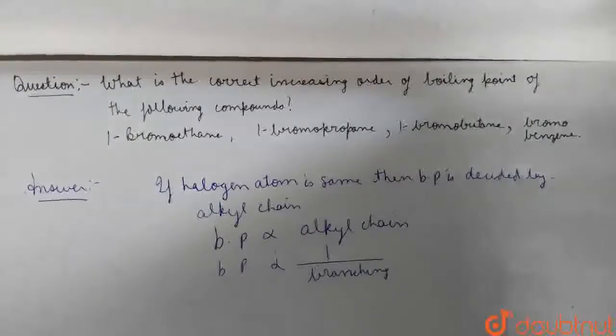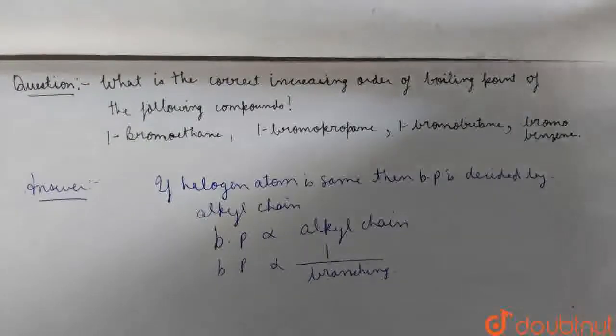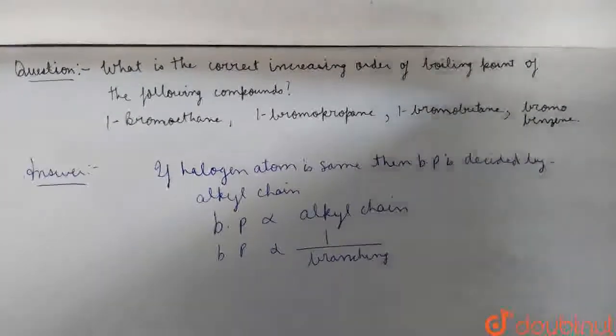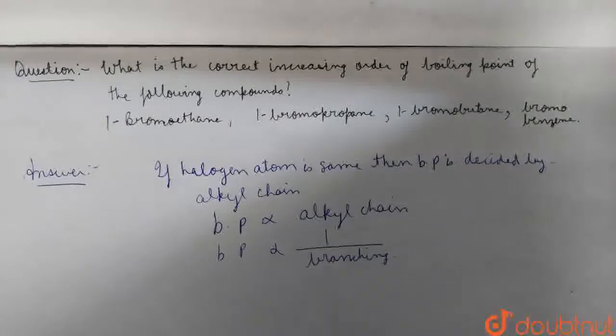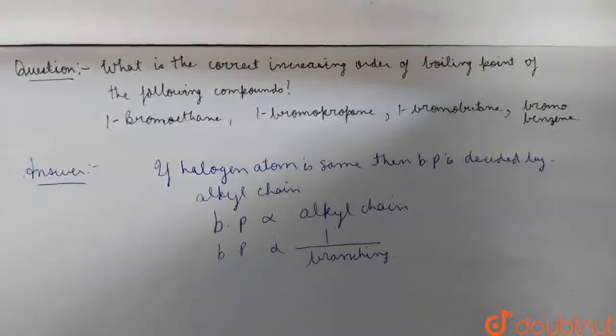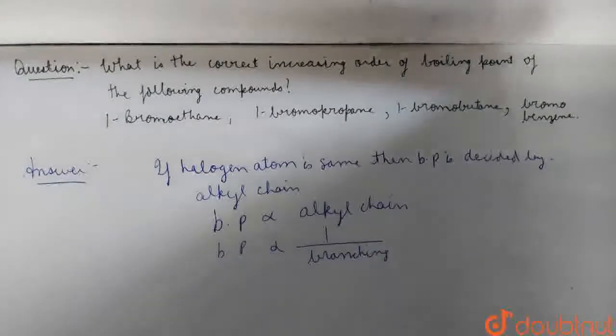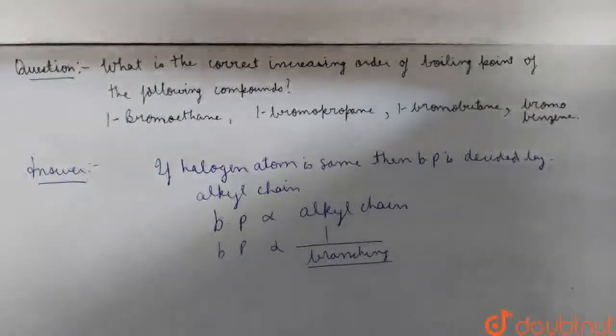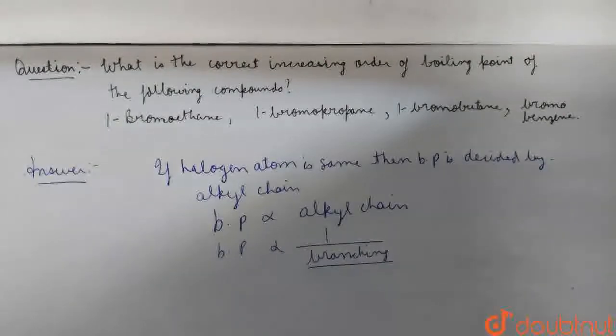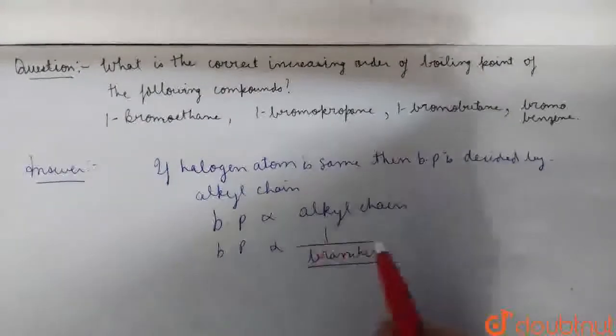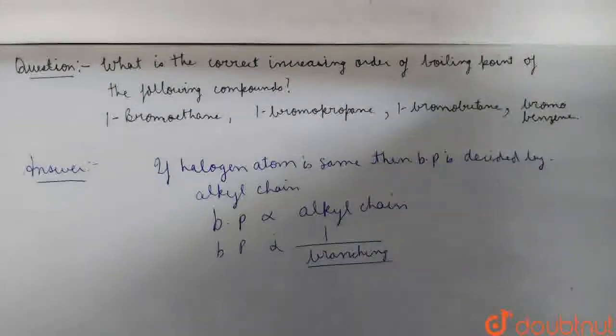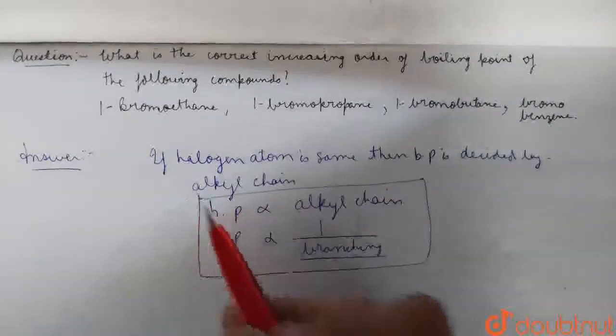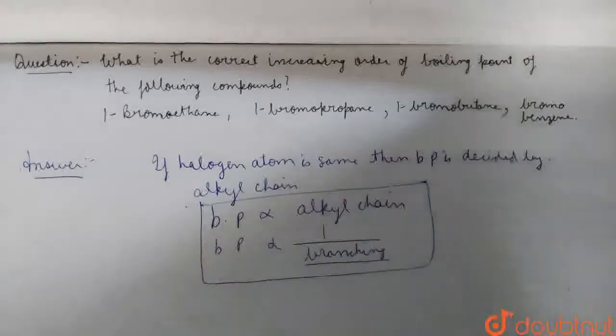Boiling point is proportional to the Alkyl Chain. But if there is a compound where the carbon atoms are in branches, we know that atoms in a sphere type arrangement affect boiling point. Branching decreases the boiling point. It also depends on the intermolecular forces, but it is not much use in this comparison.